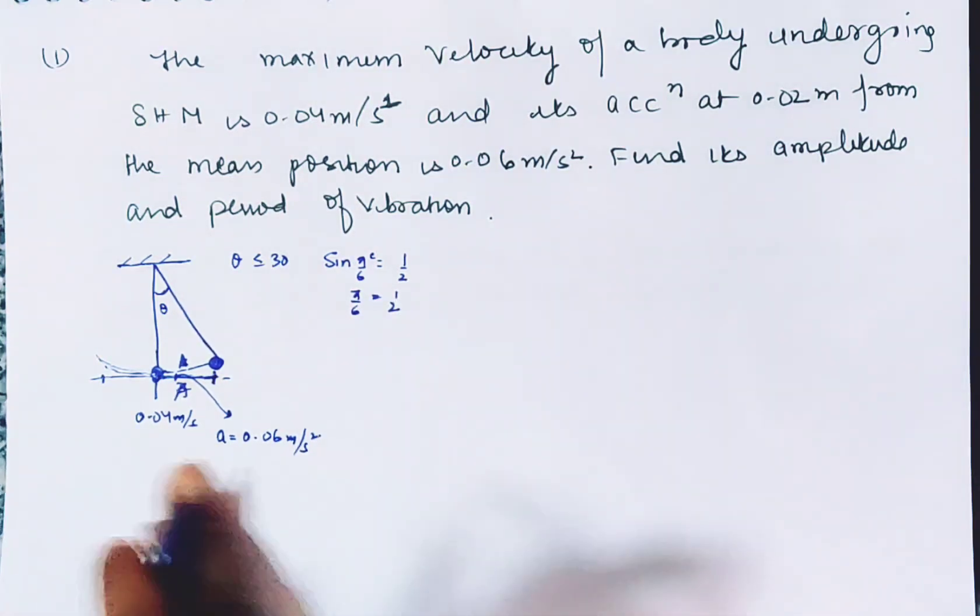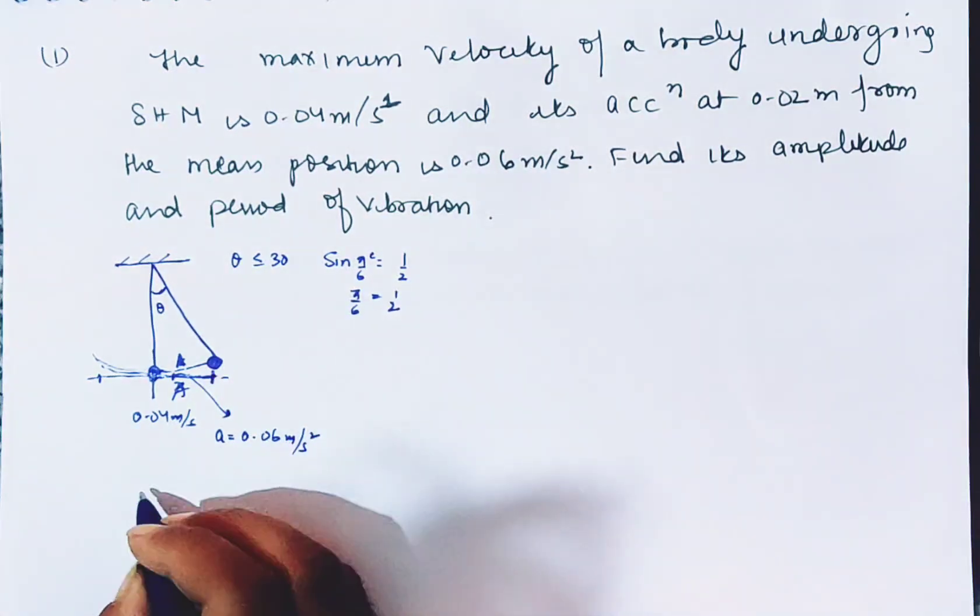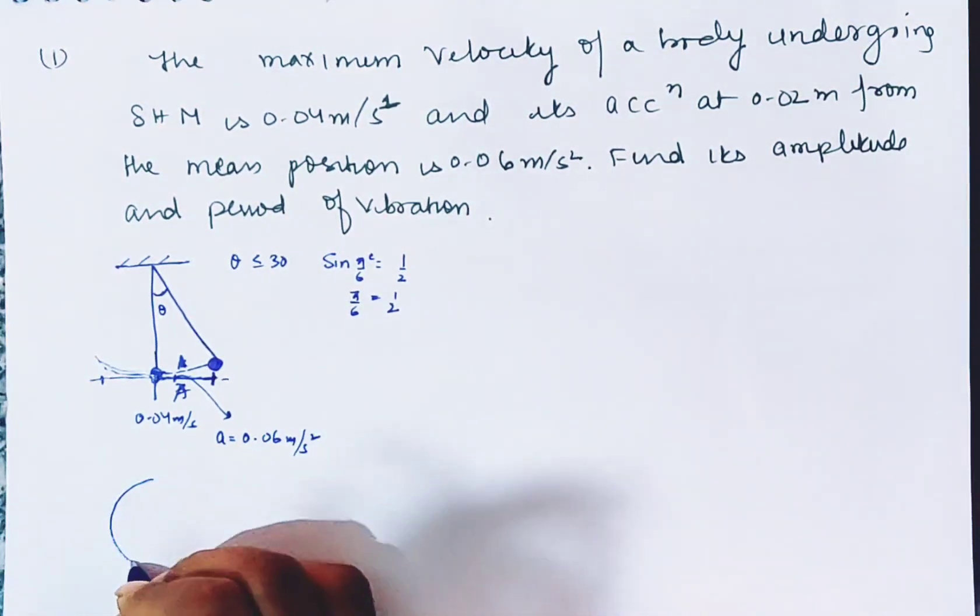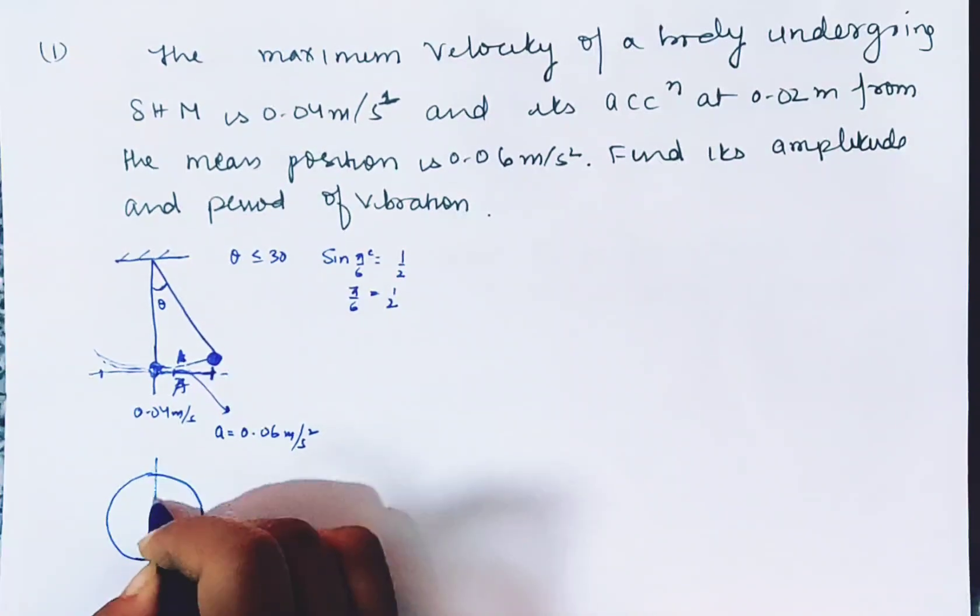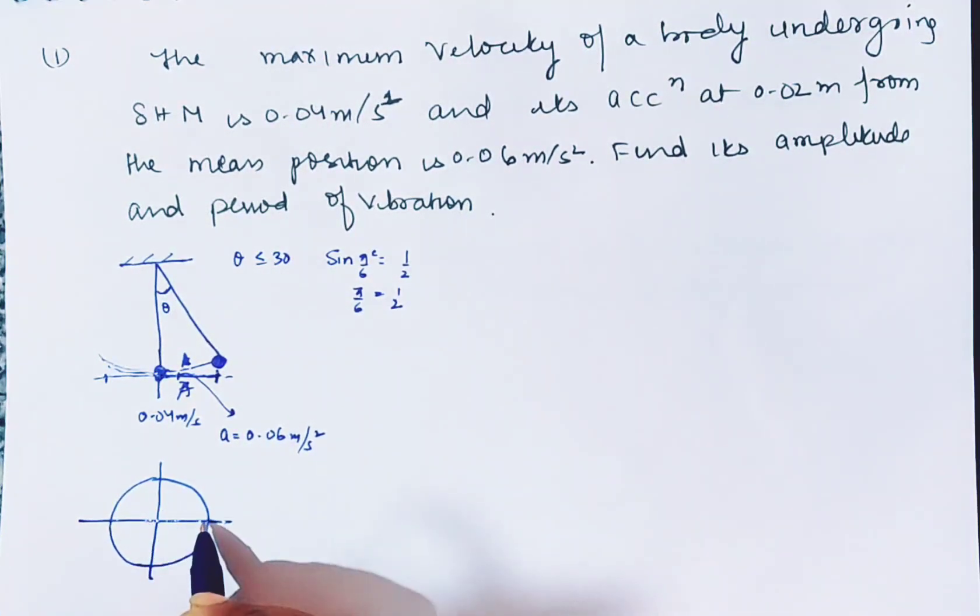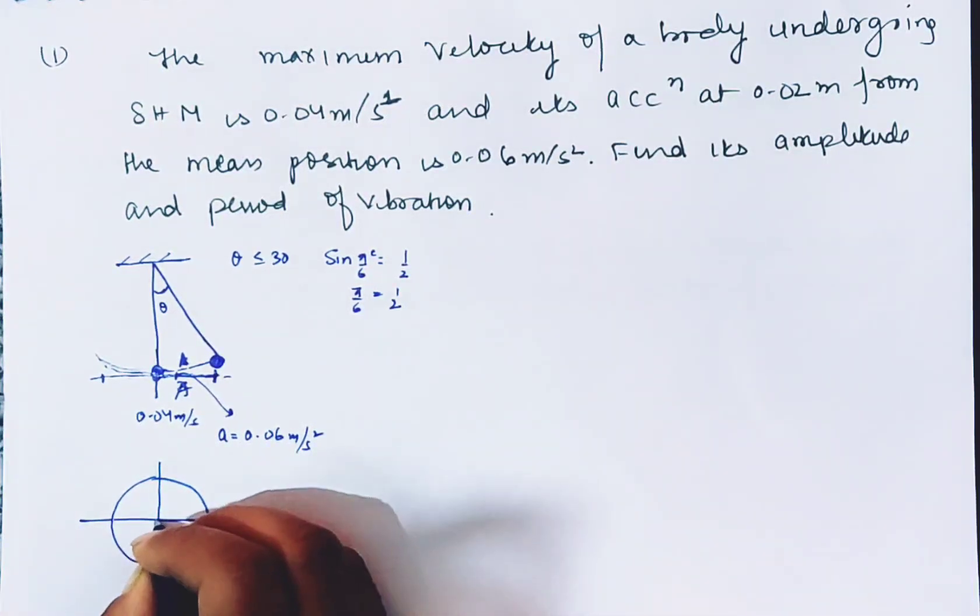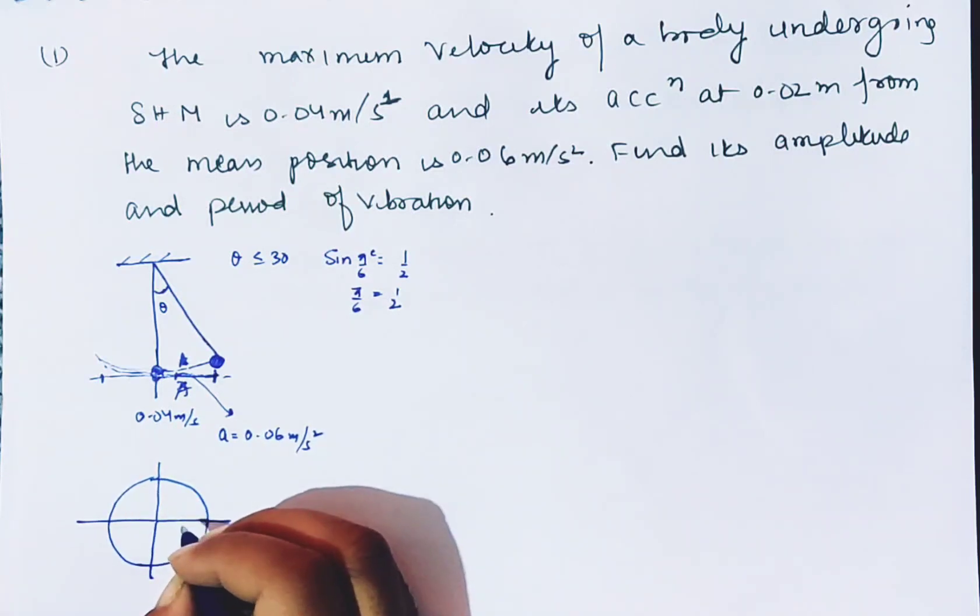This is the amplitude and period of vibration. This is another way to visualize it. This is a circle. The particle oscillates in diameter, but the other particle we are going to say that it is circular motion. It is the projection of the particle. So mean position, mean position where velocity is maximum, and amplitude.